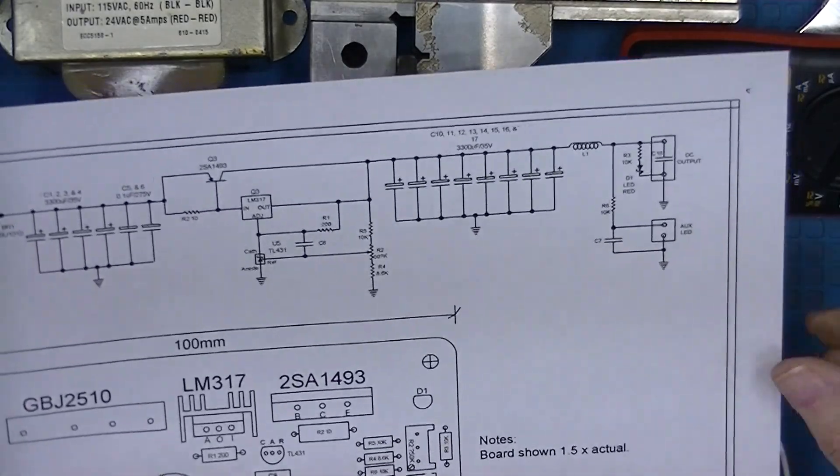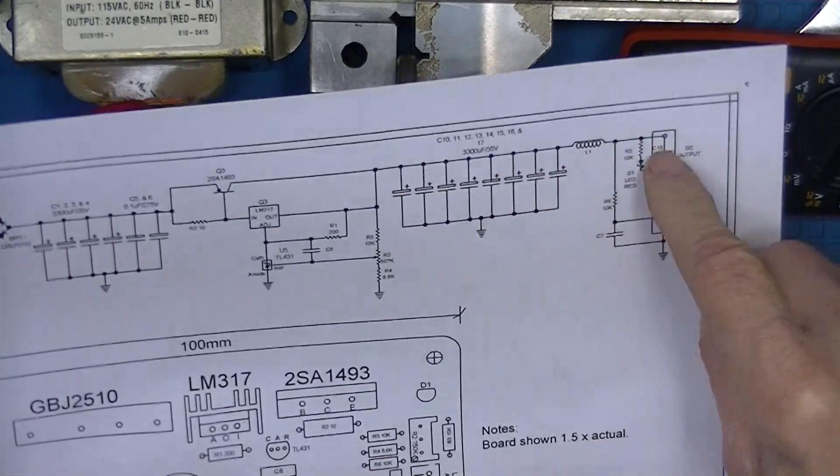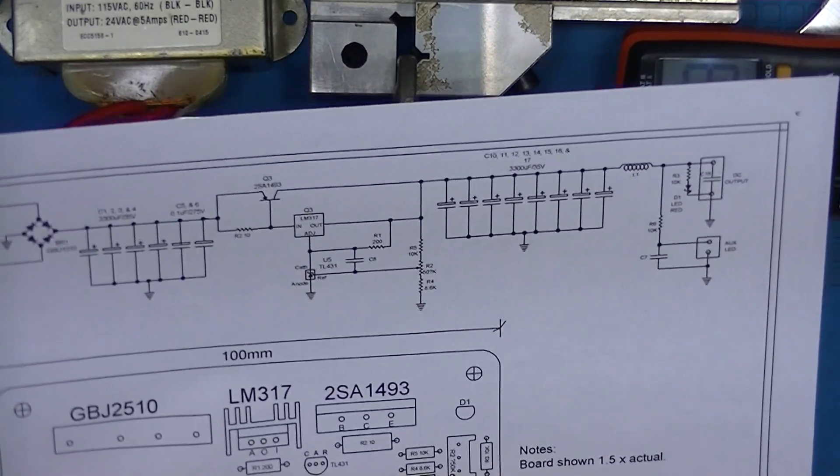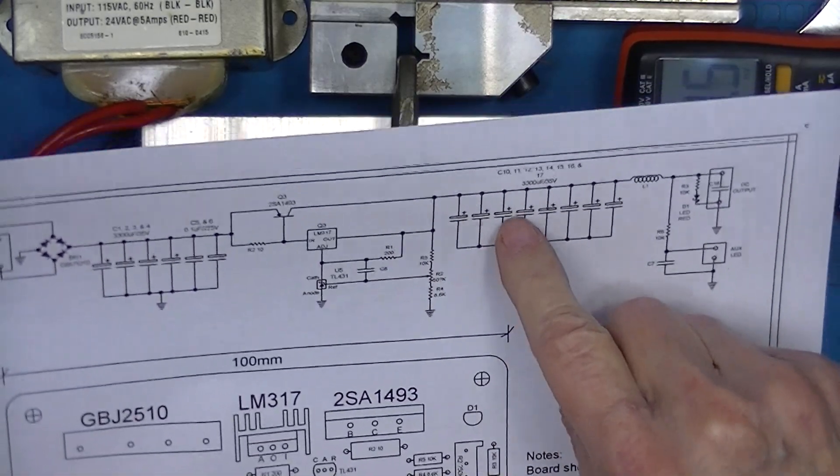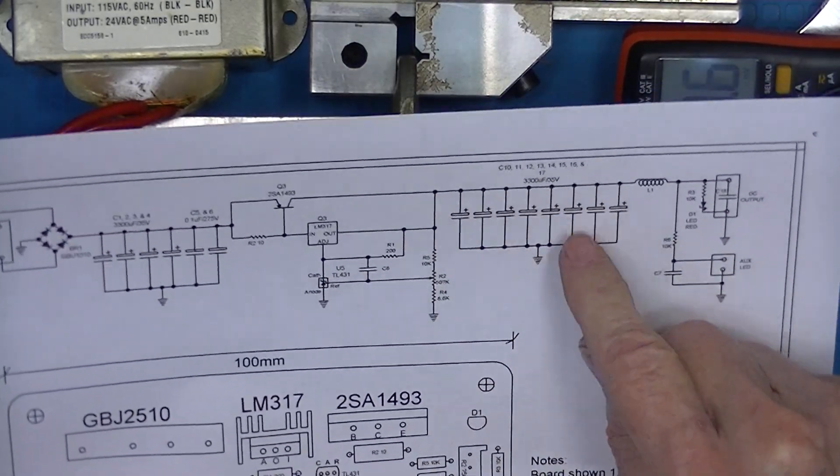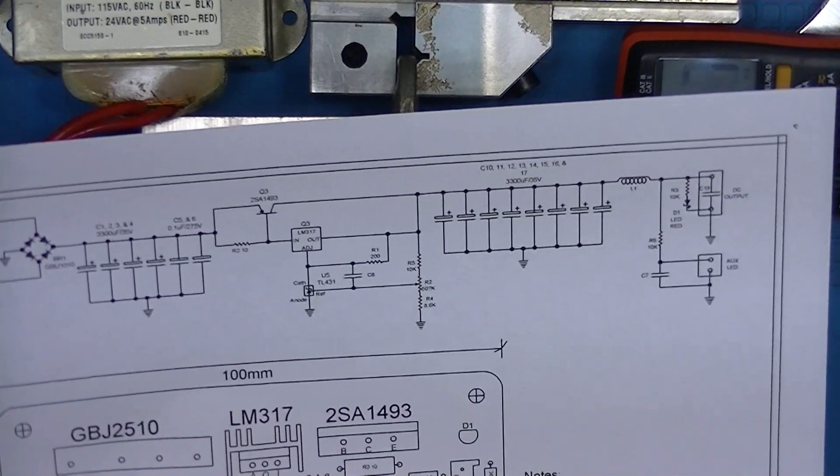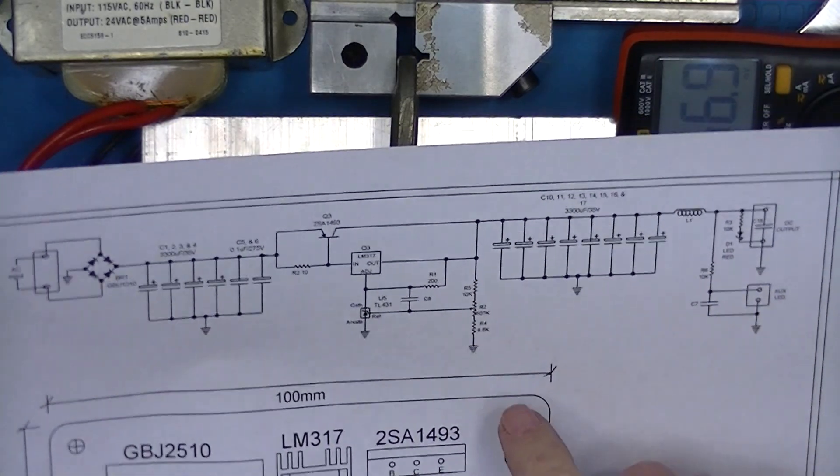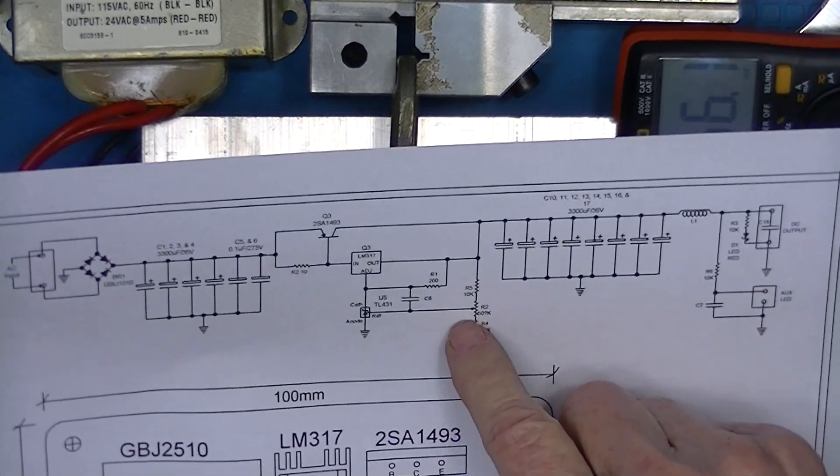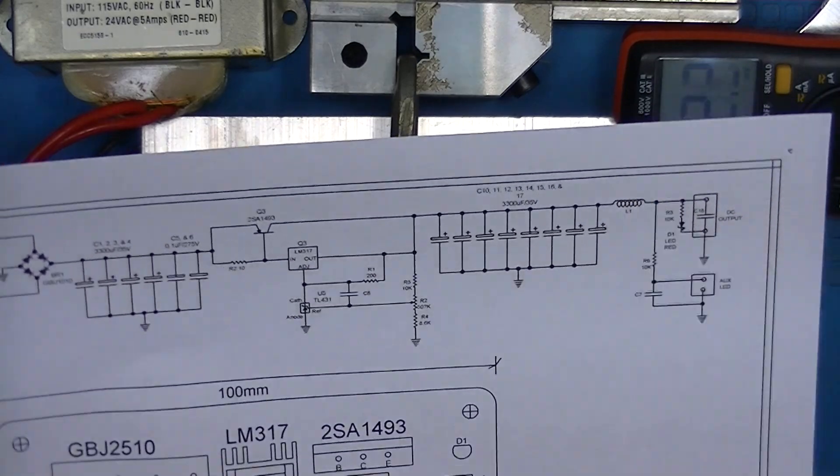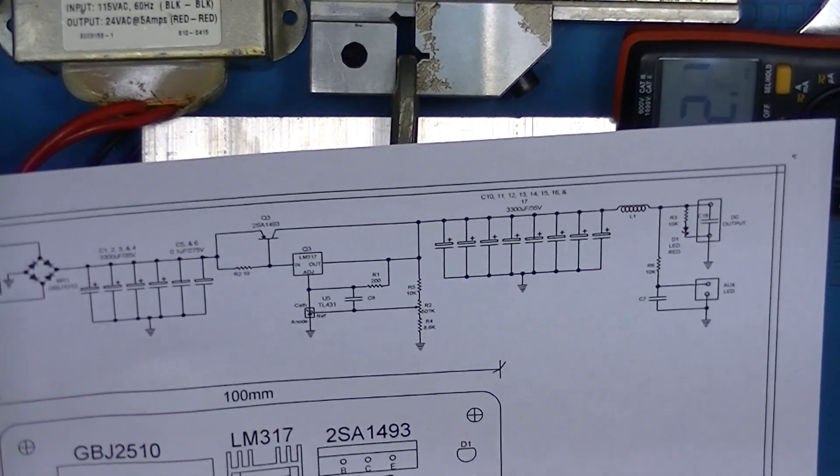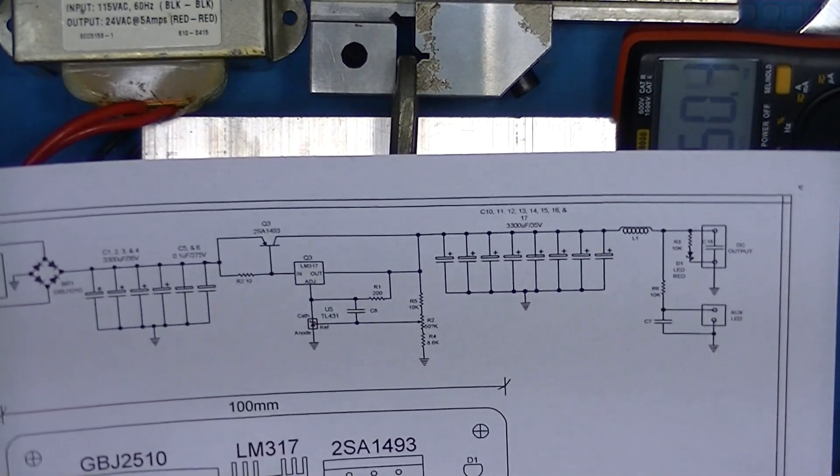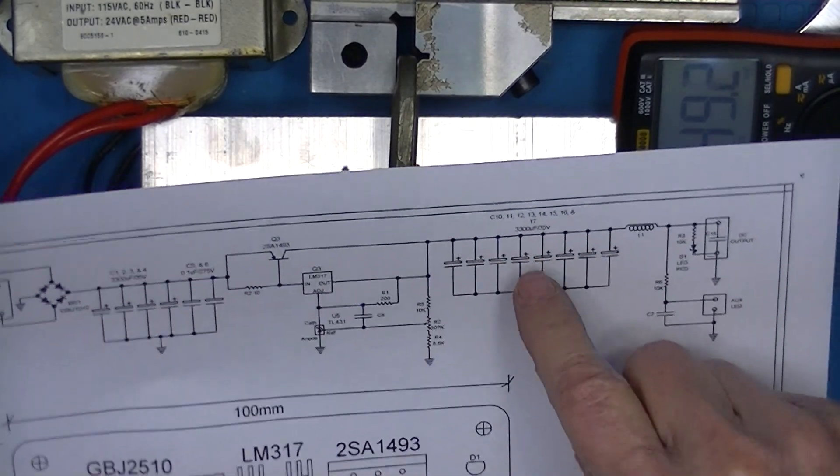Looking at the power supply you notice there's no bleeder resistors across the output, so once turned off there's a good chance there's going to be a charge contained in here. The only current drawn would be the current through this divider and this is a 50k pot. The current drawn through this was enough to light the LED, so it's not current limiting that's for sure. In fact the instantaneous short circuit current is probably really high.